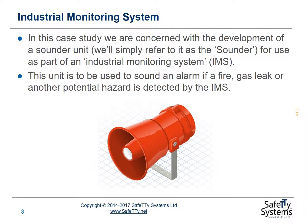In this case study we're concerned with the development of a sounder unit — we'll simply call it the sounder — for use as part of an industrial monitoring system. This unit involves controlling a horn unit in order to sound an alarm if a fire, a gas leak, or another potential hazard is detected by the IMS.